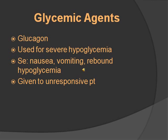Glycemic agents promote the breakdown of glycogen to glucose in the liver, increasing the serum glucose level. The medication is glucagon. It's given for severe hypoglycemia in someone who is unresponsive — if responsive, give 15 grams of glucose such as orange juice. Side effects are nausea, vomiting, and rebound hypoglycemia.